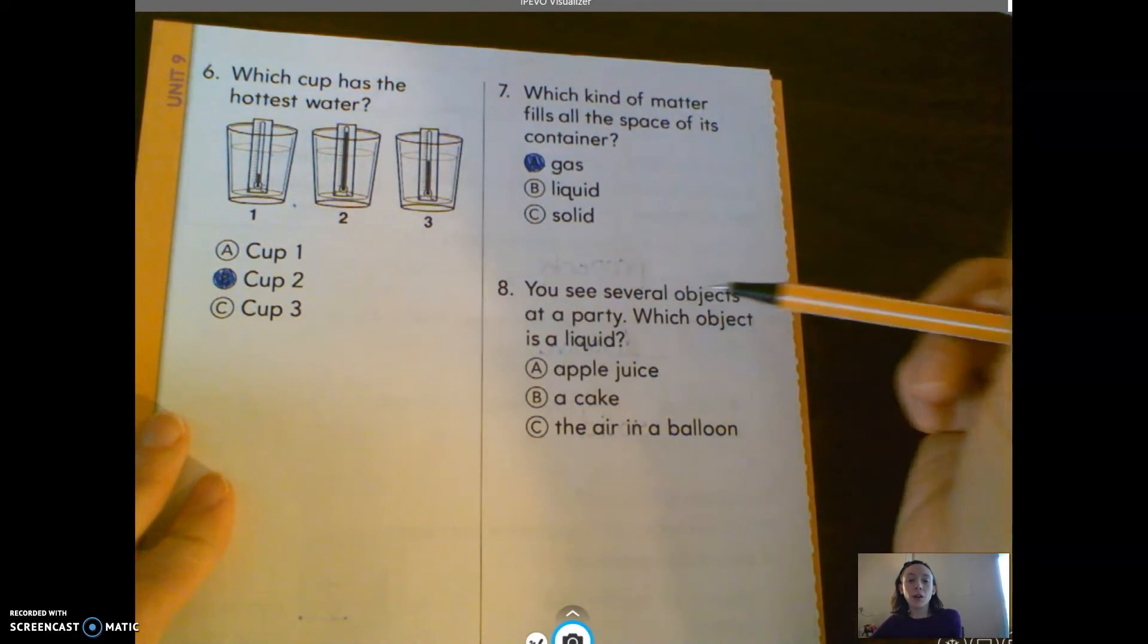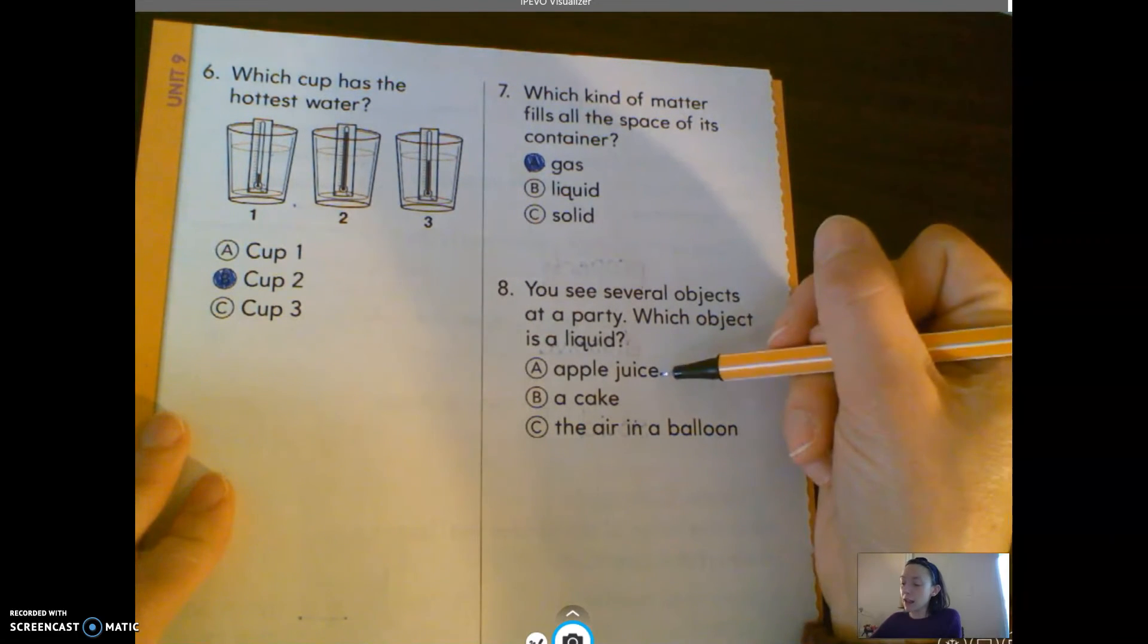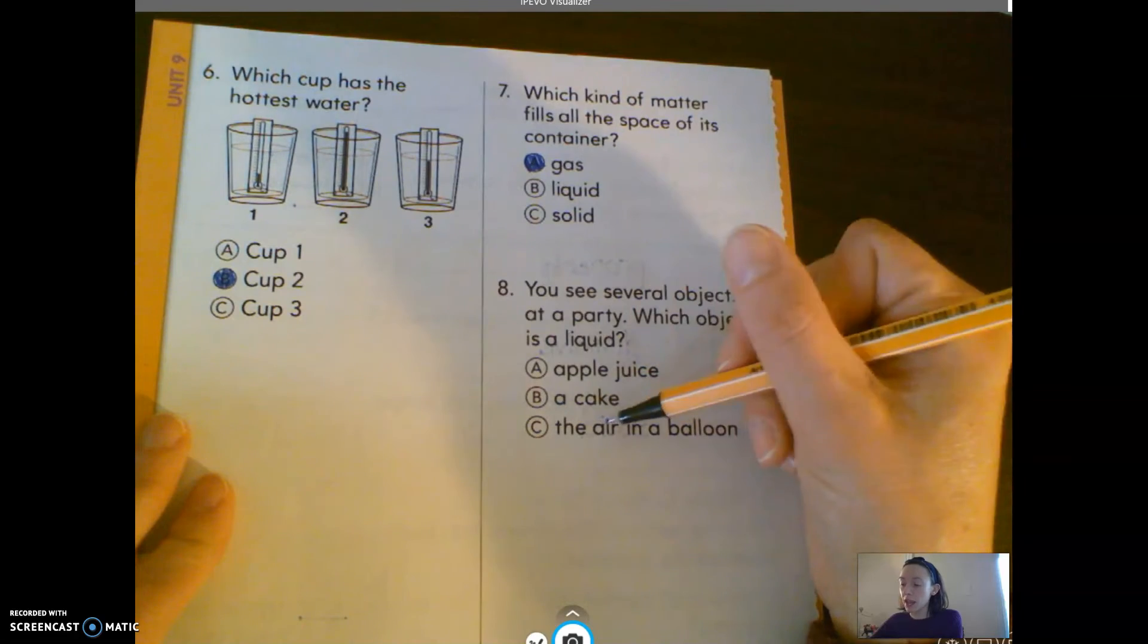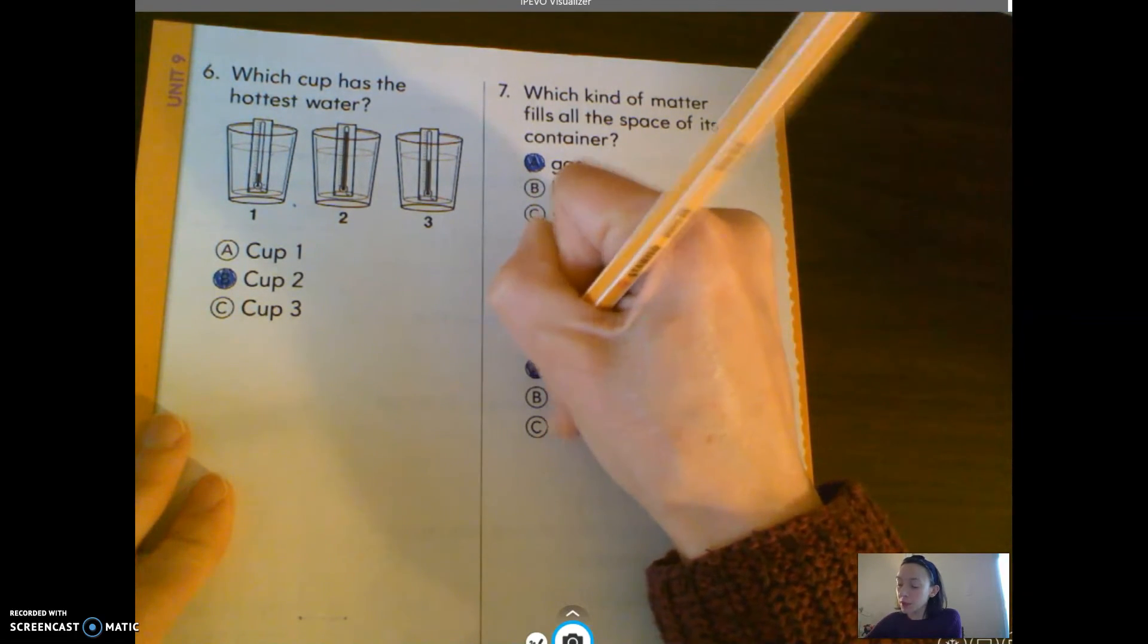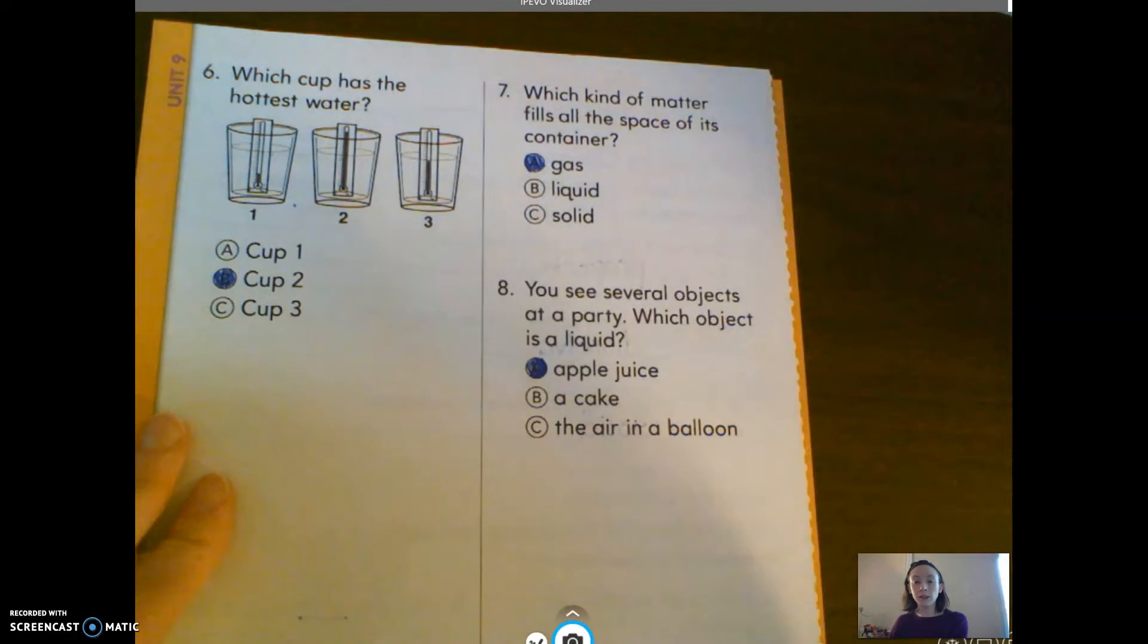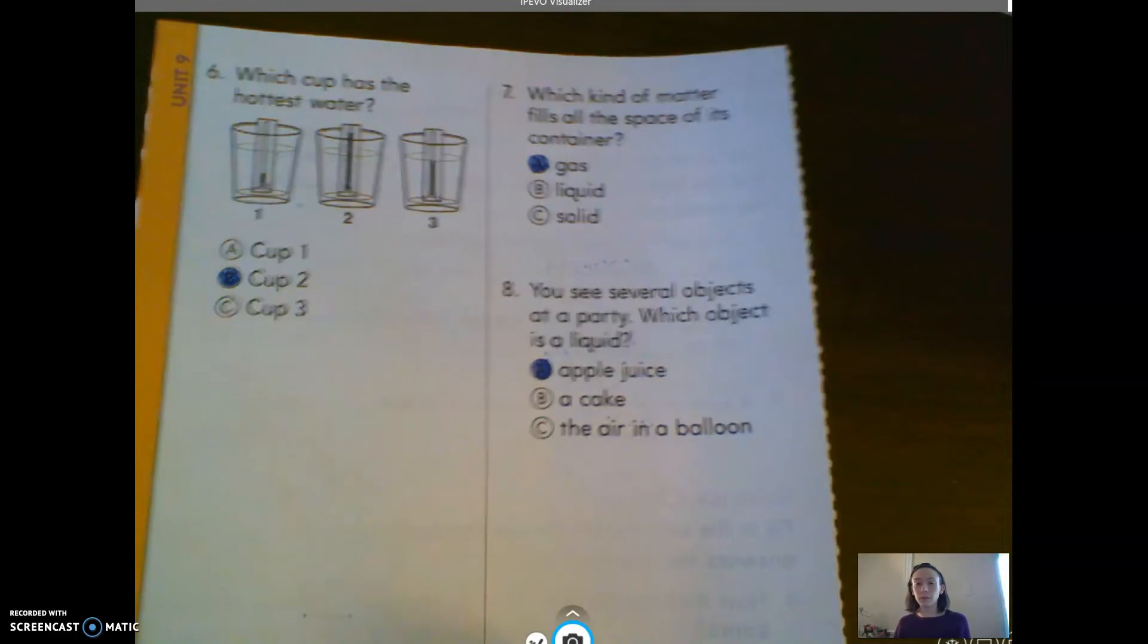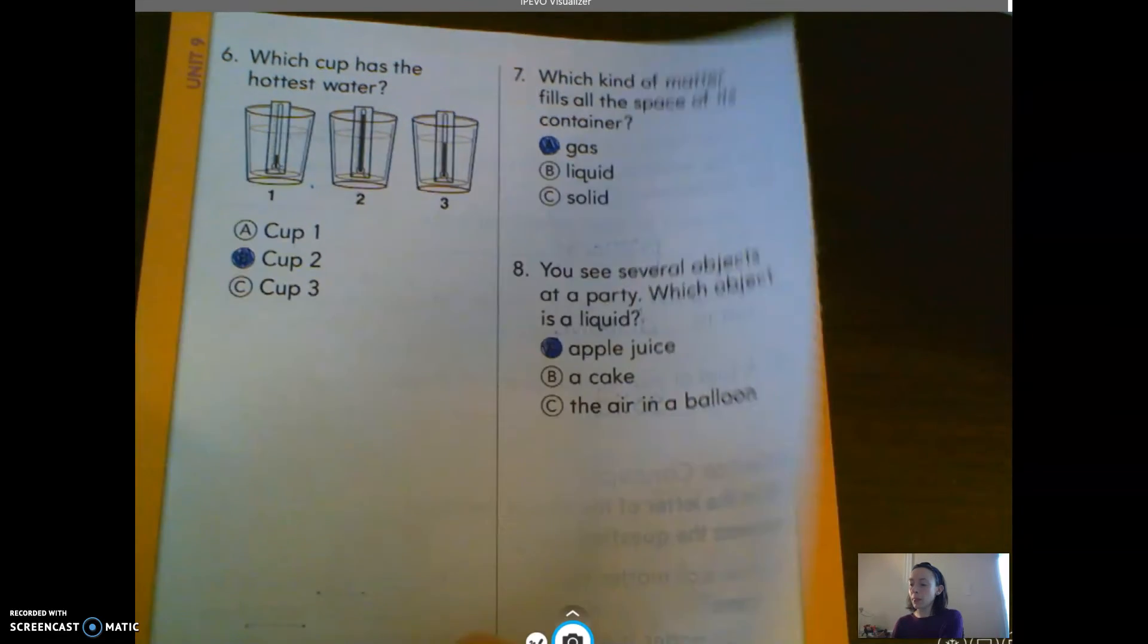Number eight: you see several objects at a party. Which object is a liquid? Is it A, the apple juice, B, a cake, or C, the air in a balloon? Well, that would be A, apple juice is a liquid.